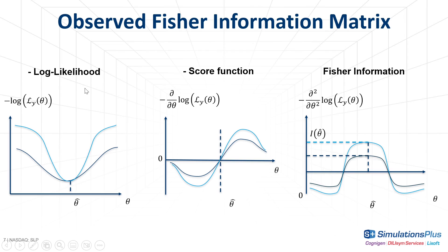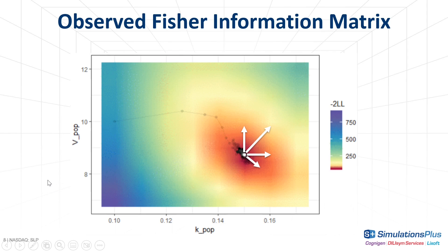Taking the derivative of the score, that is the second derivative of the log likelihood, gives a metric for the precision of the maximum likelihood estimate, as shown on these figures for two situations with higher precision in light blue or lower precision in dark blue. On the left, we see the graph of minus the log likelihood in the parameter space. In the middle is the graph of minus the first derivative of the log likelihood, or score function. And on the right, the graph of minus the second derivative, or Fisher information. The level reached by this curve at the maximum likelihood estimate is the observed Fisher information, and it is higher for the light blue curve, which corresponds to the more narrow likelihood maximum. This graphical example is in one dimension, but the parameter space is usually multidimensional, which is why the Fisher information is a matrix, which gives as diagonal and off-diagonal terms the precision of the maximum likelihood estimate when changing each parameter value separately or together.